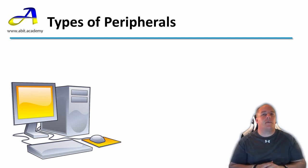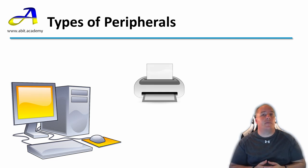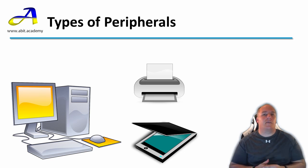Another couple of types of peripheral that most people are familiar with is a printer, which allows you to get printed output from the computer, and scanners, which allow you to digitise or scan in documents or photos.